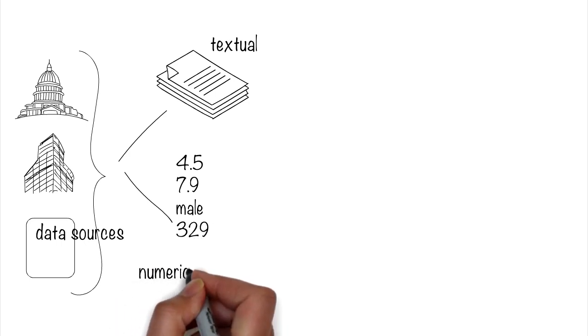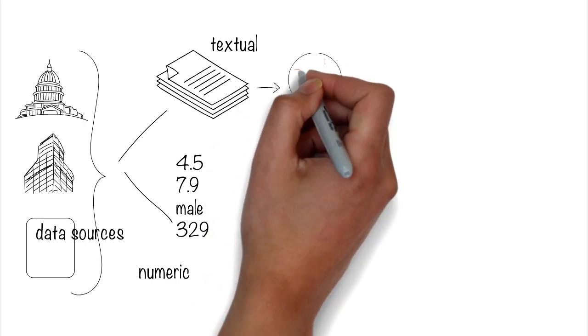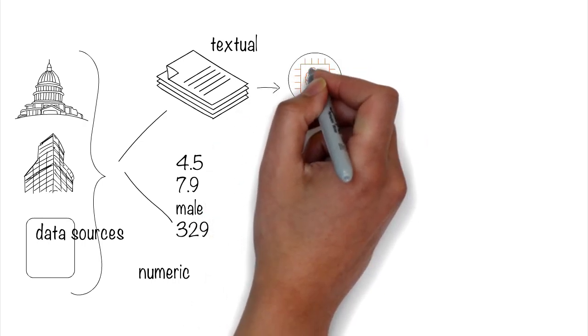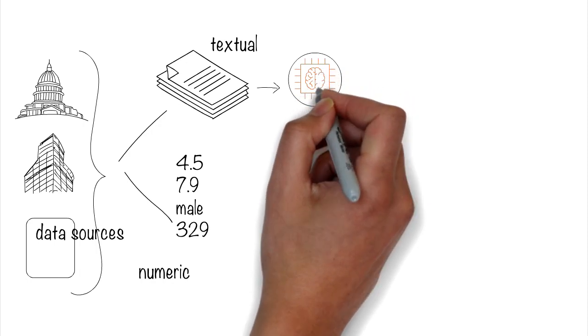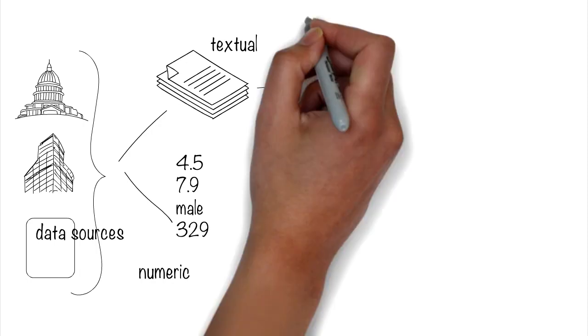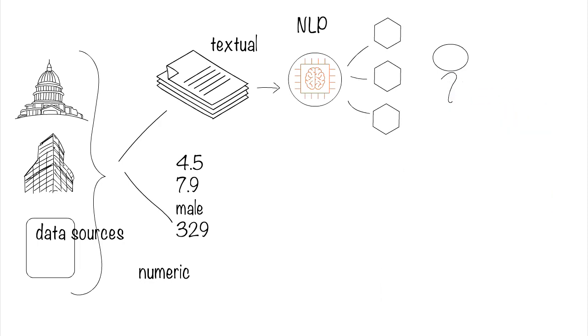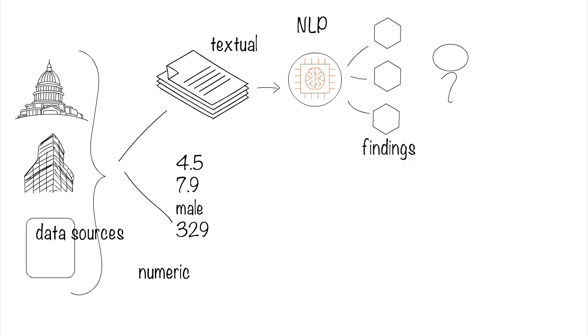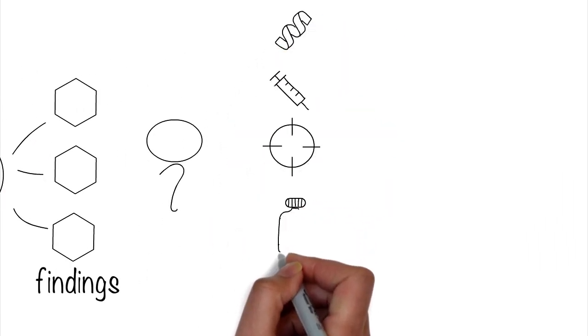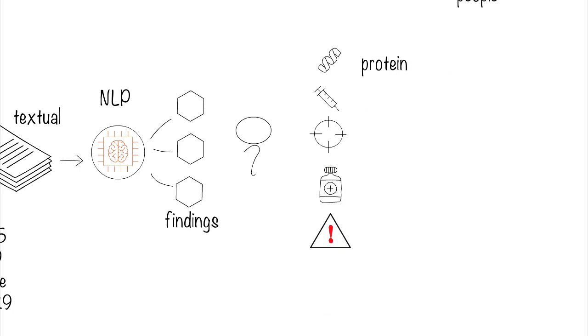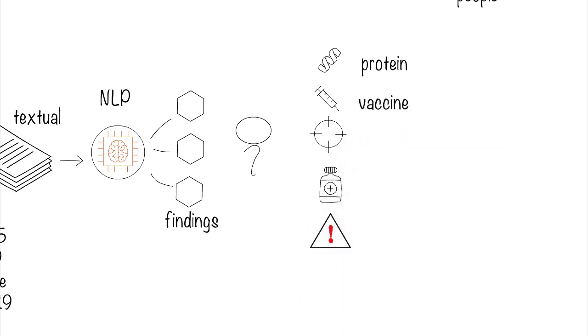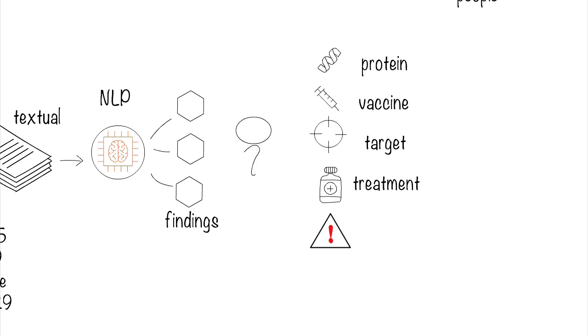Data is being added each day to these data sets. Let's talk about textual data. It's impossible for humans to read through all the literature and extract critical information. So natural language processing or NLP, which is a branch of AI, is being applied on this vast data set to extract useful information about the virus. We can use NLP on this literature data to understand the protein structure, develop vaccinations faster, understand treatment options and targets, predict adverse effects, determine dosage, and so on.